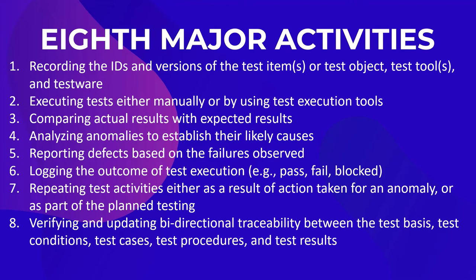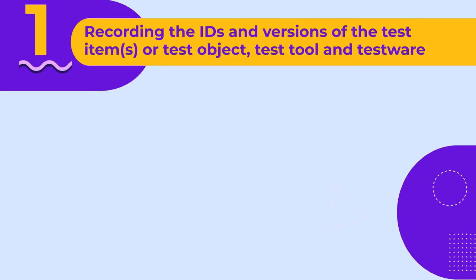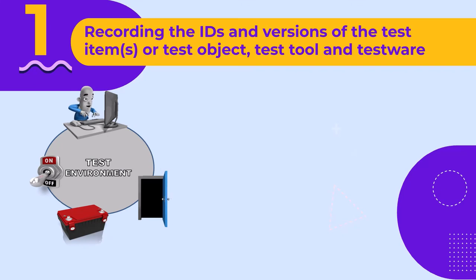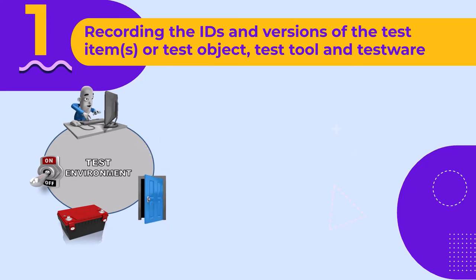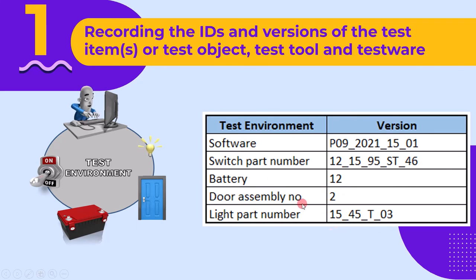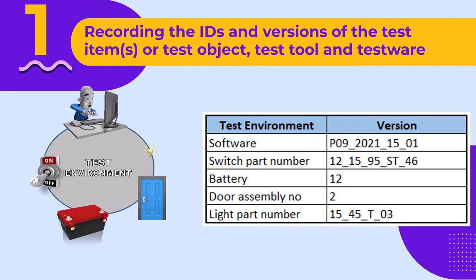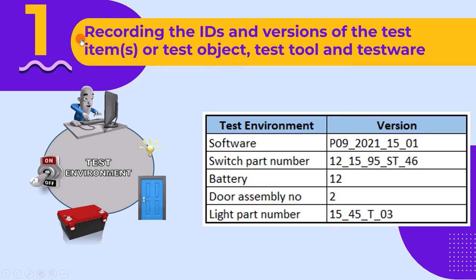Now let's understand each of these test activities one by one. The first activity is recording the IDs and versions of the test item or test object, test tools, and testware. As we know, during test execution we establish the test environment, which includes different hardware and software. During test execution, we need to record their version numbers so that in future we can use them for reproducing issues.